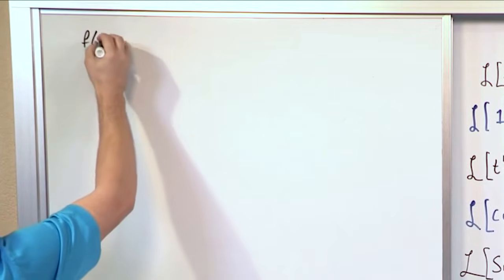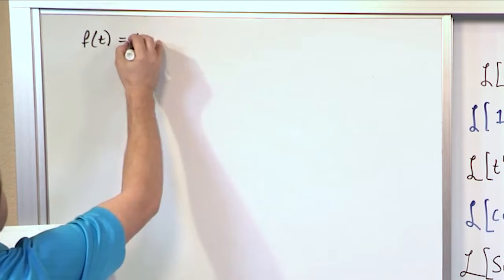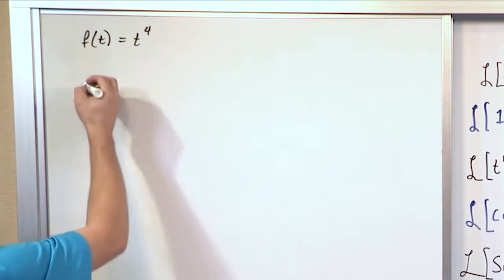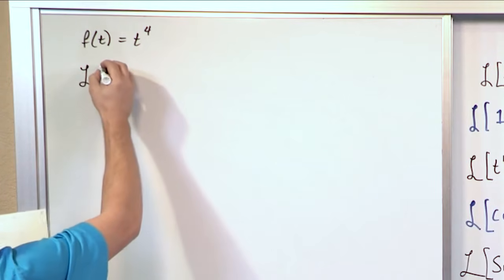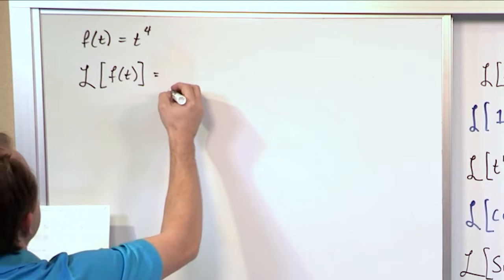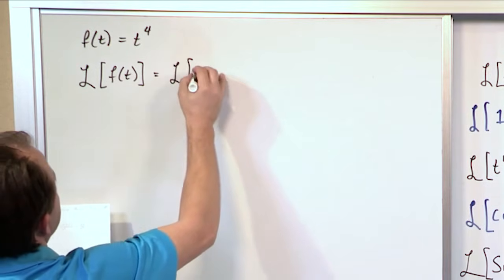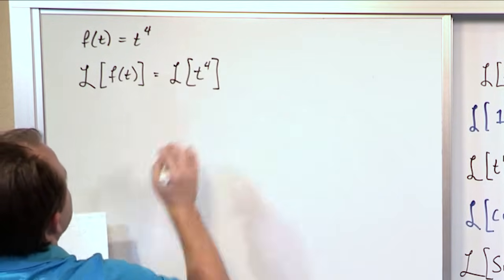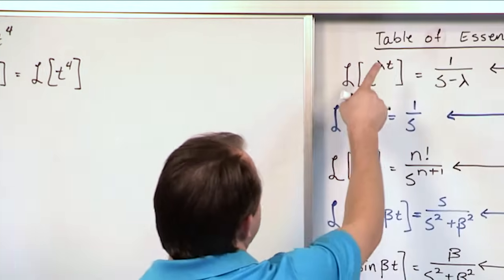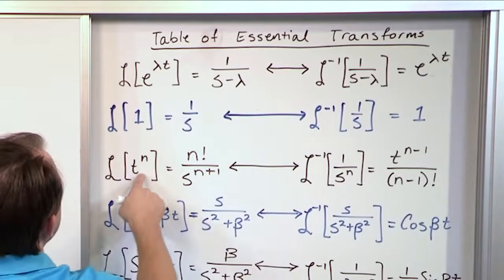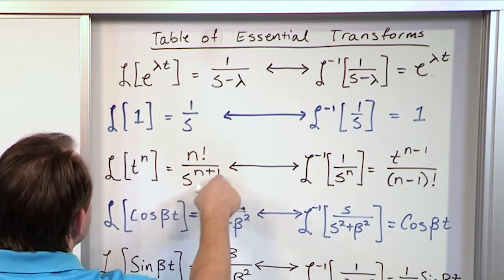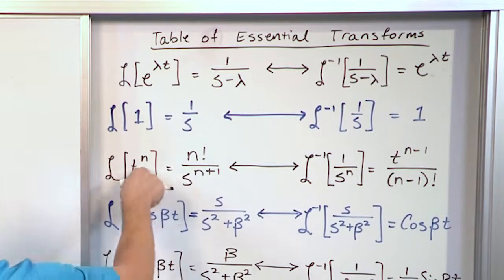So let's say that we want to find the Laplace Transform of the function of time, t to the fourth. So f of t equals t to the fourth. The way you would do that on your paper is you would just say Laplace Transform of f of t equals the Laplace Transform of t to the fourth, right? So how do you do that? You go over to your table of Laplace Transforms and say, hey, is there anything that looks like that? Ah, t to the power of n. It's going to be n factorial over s to the power of n plus 1. In this case, n equals 4.